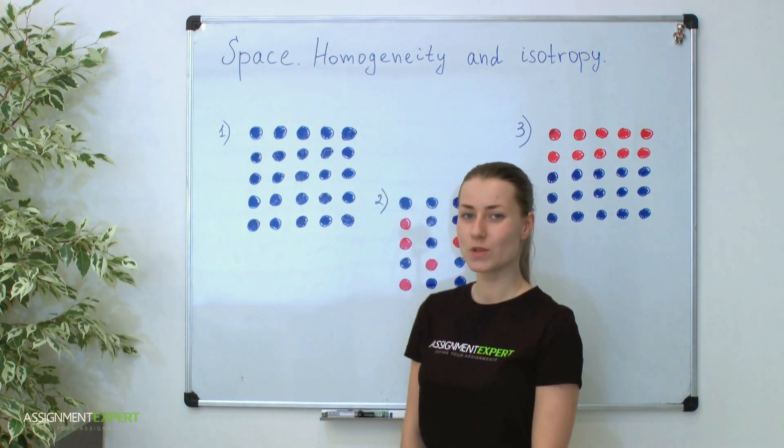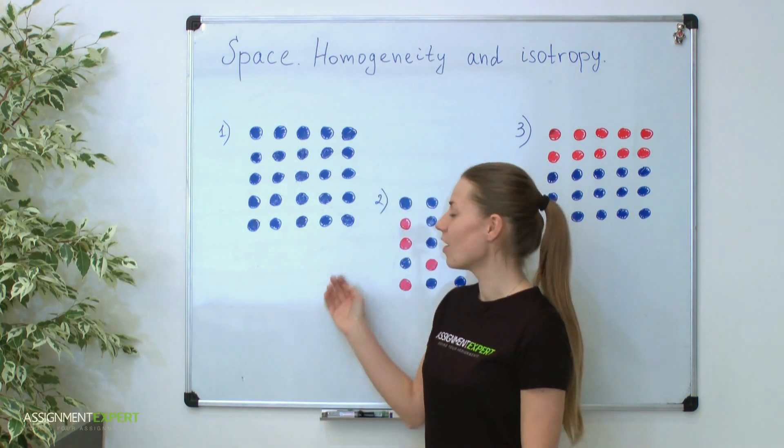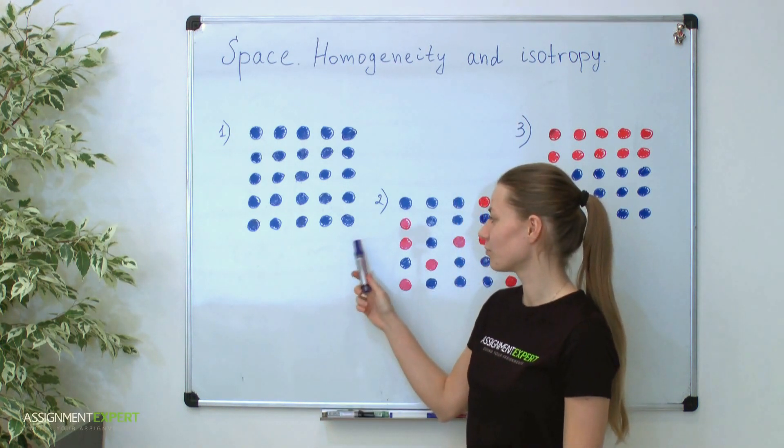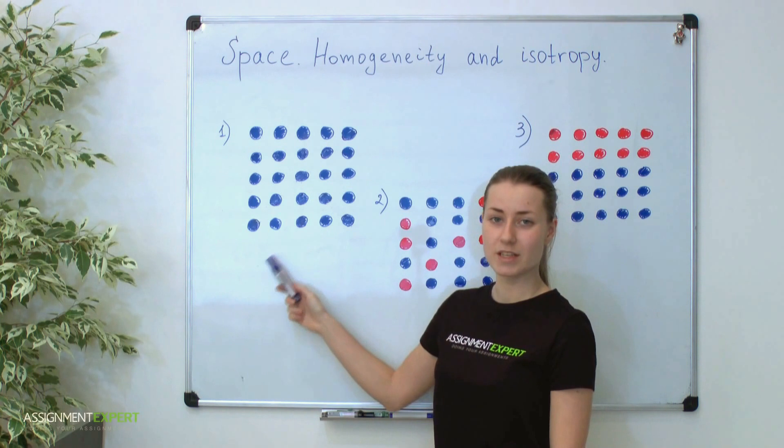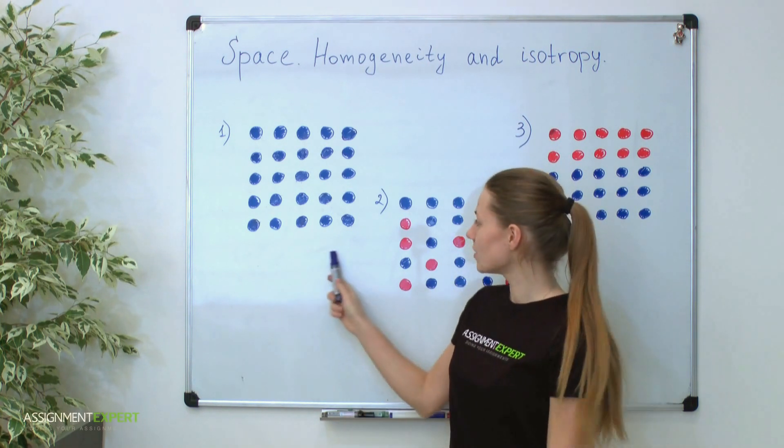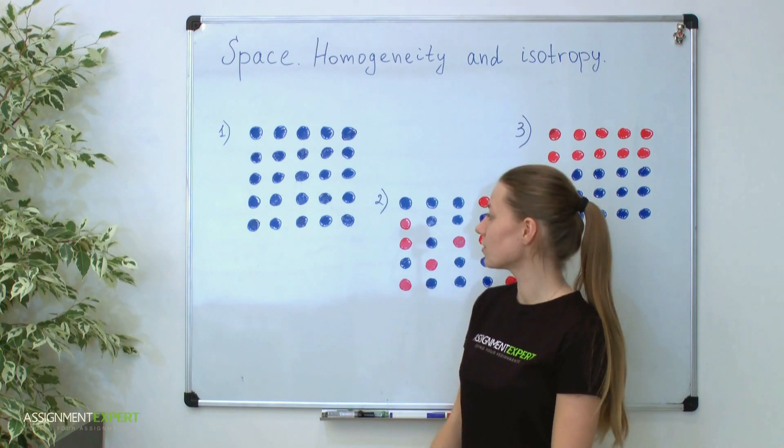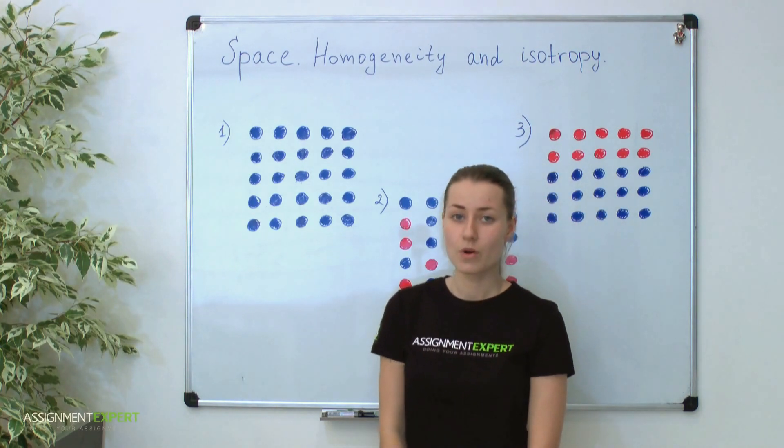Consider these notions with the help of a crystal. On our picture you can see a very enlarged cross-section of a crystal. Each dot represents a single atom in a crystal lattice. You see that our first crystal is homogeneous because all its atoms are identical.